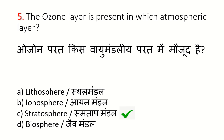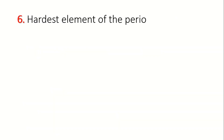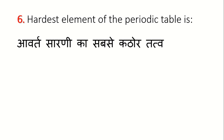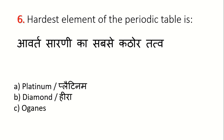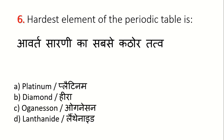Let's see the next question. What is the hardest element of the periodic table? Options are: A. Platinum, B. Diamond, C. Organicum, D. Lengthenide. The correct answer is Option B: Diamond. The hardest pure element is carbon in the form of diamond.